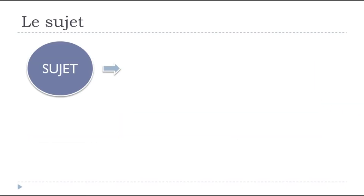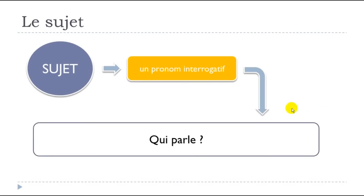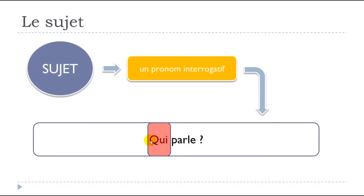Now let's see un pronom interrogatif. A simple sentence: Qui parle? The verb is parler — to talk. When you put qui (who) at the start, qui becomes the subject of the sentence. It's a question: Who is talking? Qui parle?